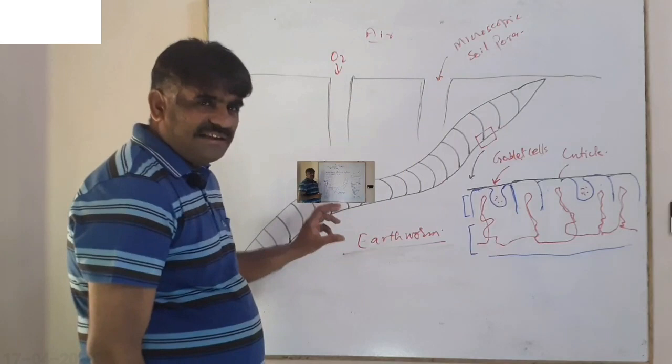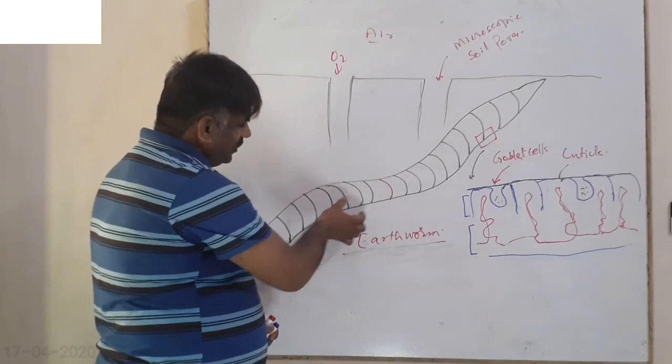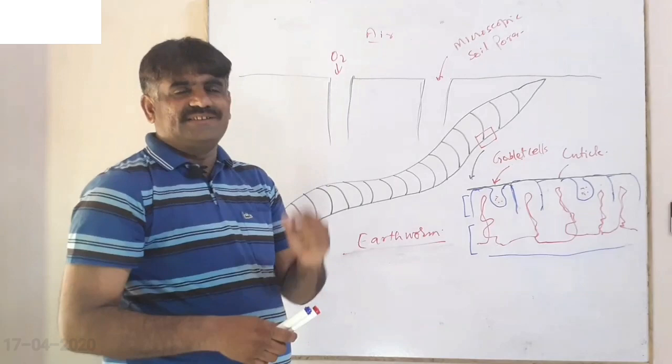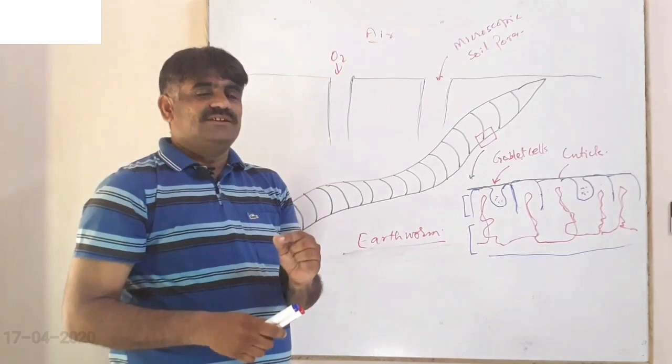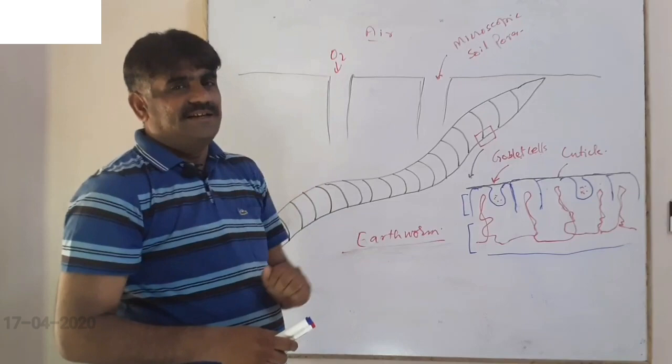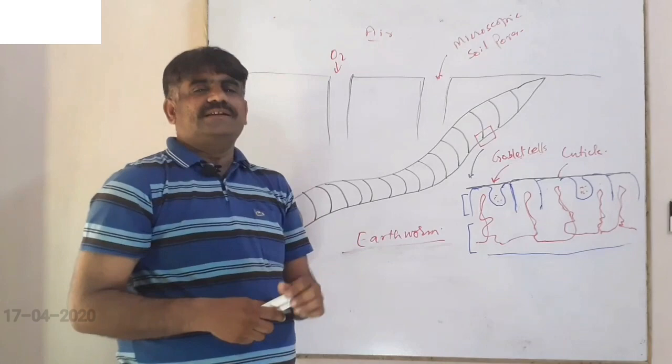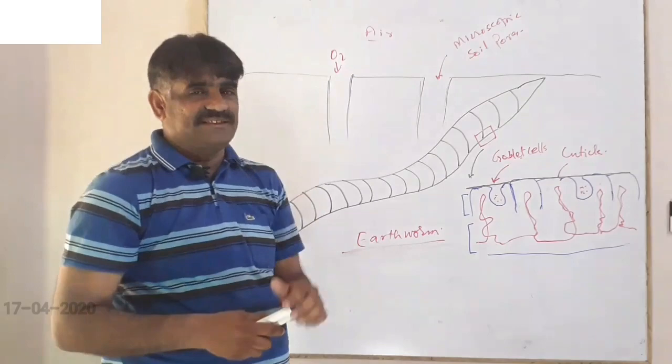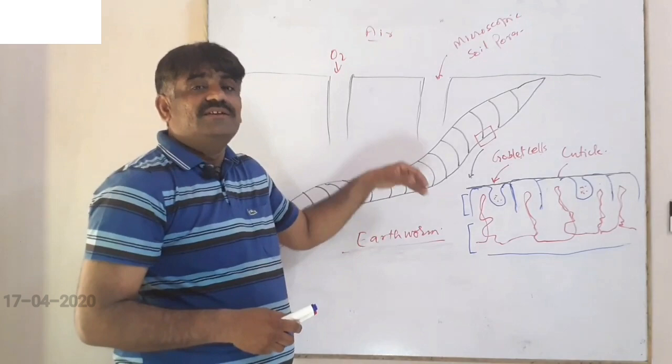Now, gas exchange in earthworm. Earthworm is a complex triploblastic animal. It has well-developed organs but yet no specialized respiratory organs. Its entire skin surface is used for gaseous exchange. Earthworm lives in moist places, in burrows of moist soil. Because it has no exoskeleton, it cannot live in dry places or a dry environment — it would be desiccated. So it makes its burrows inside moist soil.